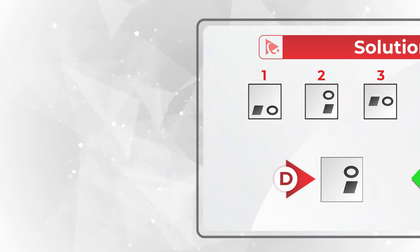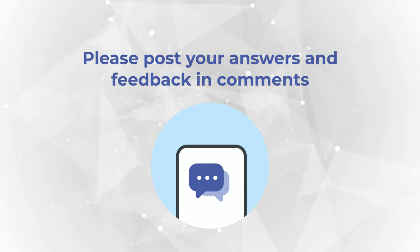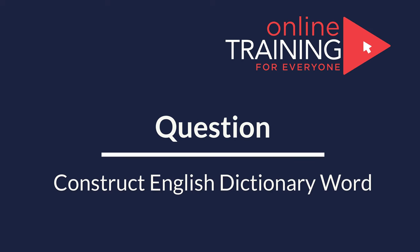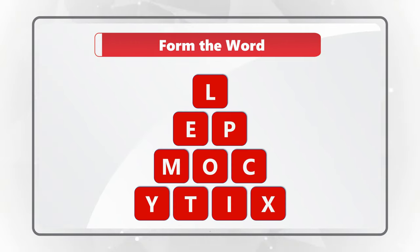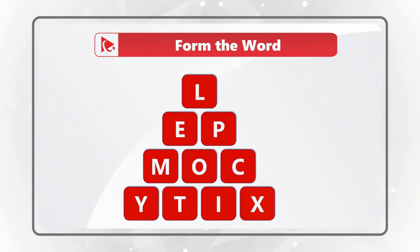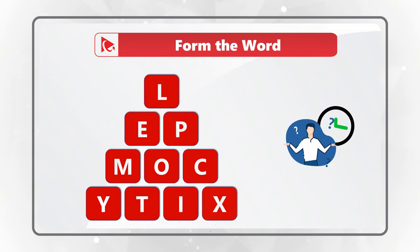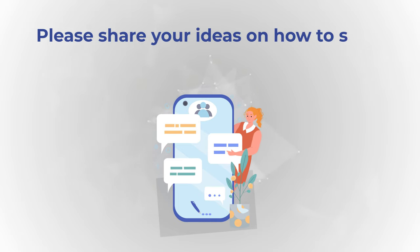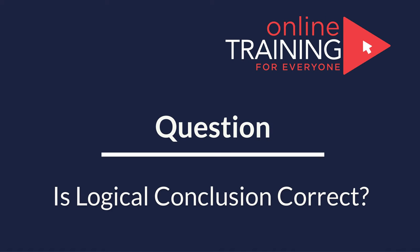For more practice problems with solutions, check out the description of this video. Here's another practice question: you're presented with 10 letters — L, E, P, M, O, C, Y, T, I, X — and need to form a word from the English dictionary using all letters only once. Hint: the word somehow represents the fact that there are 10 letters. Post your answer in comments. Good luck!